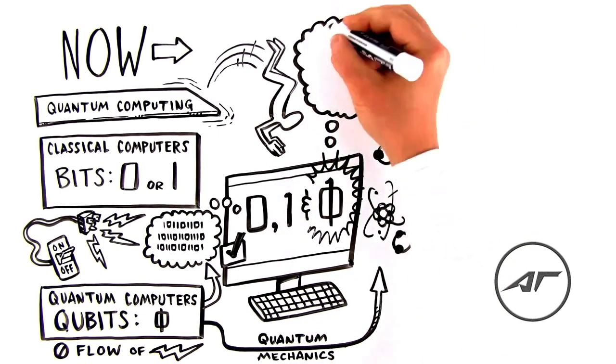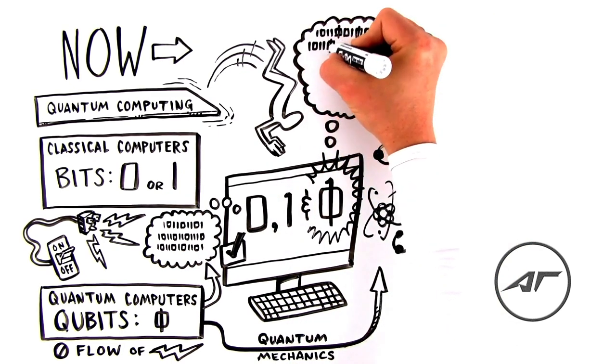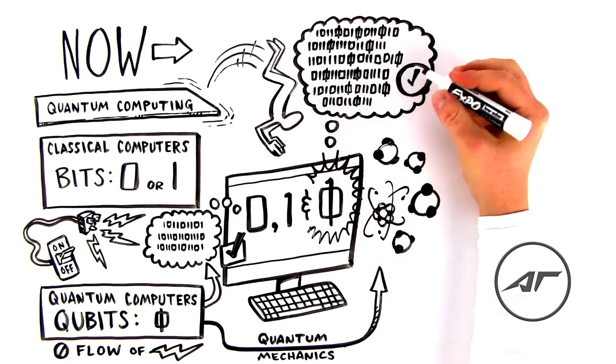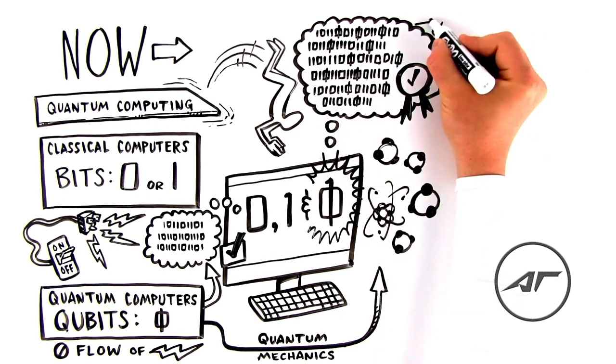Because quantum computers aren't limited to just zeros and ones, they're able to answer questions far too complex to calculate with even the most powerful classical supercomputers.